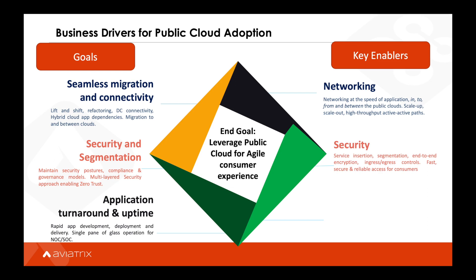When security is implemented properly at all layers, an enterprise will be able to insert advanced security services, segment their traffic in accordance with their policies, provide end-to-end encryption, and inspect inbound and/or outbound traffic in a reliable and predictable manner. And finally, when an enterprise is able to automate the lifecycle of their infrastructure in a secure manner, with a repeatable architecture and deep visibility and troubleshooting tools, they can not only meet their SLAs but also reduce their mean time to resolution.